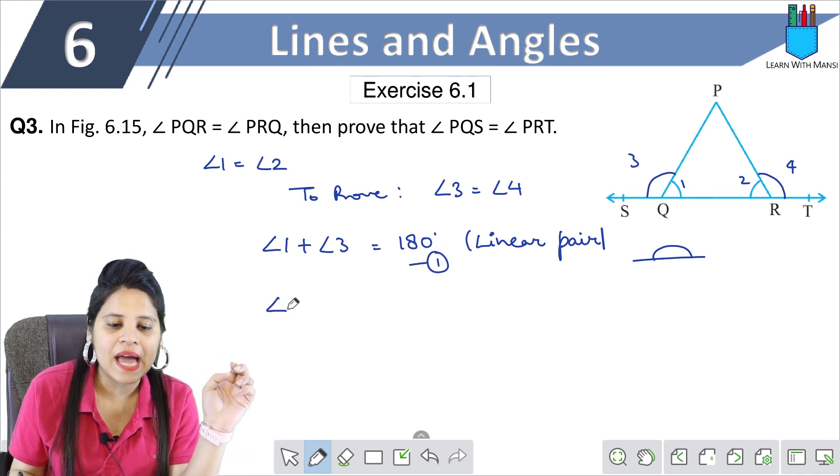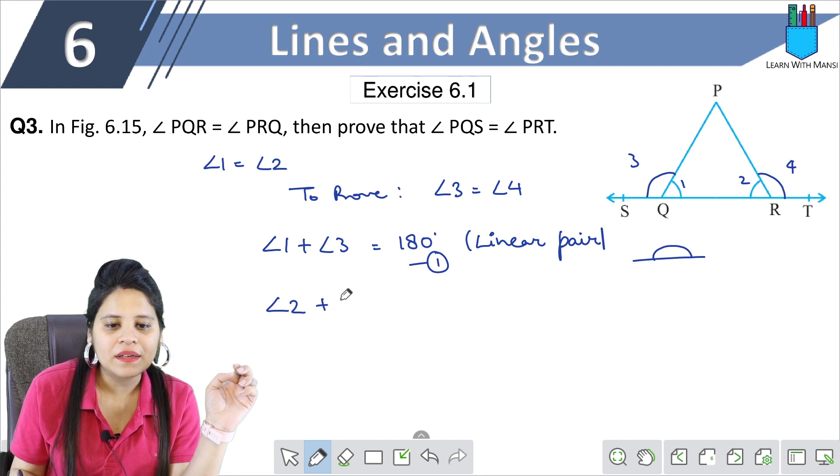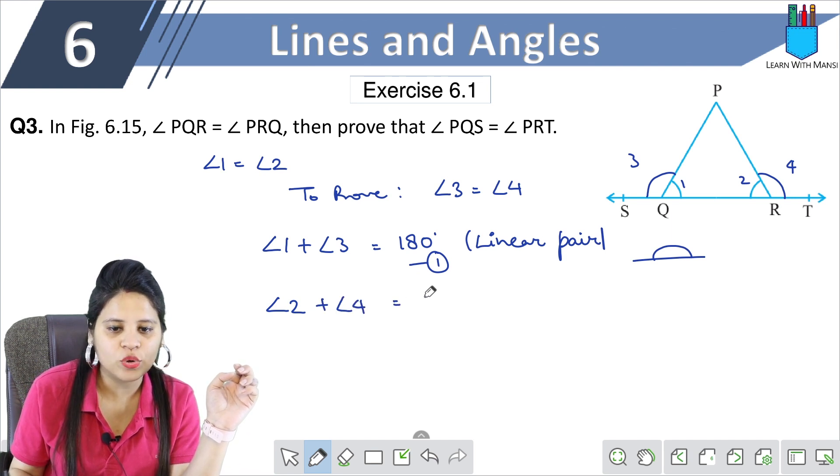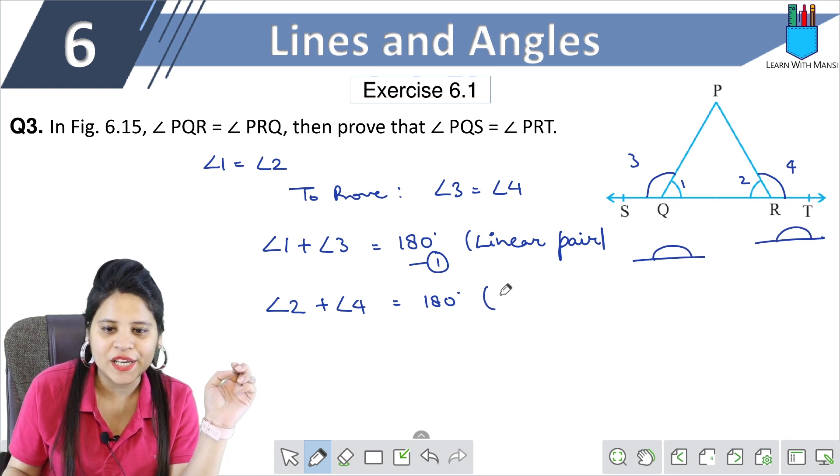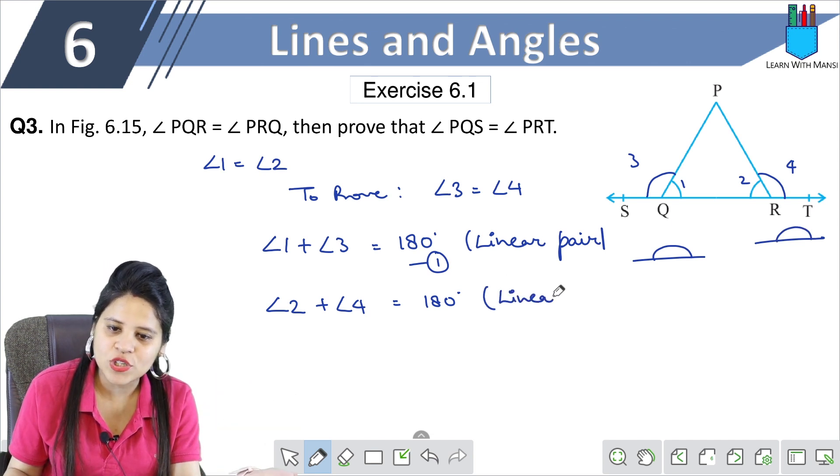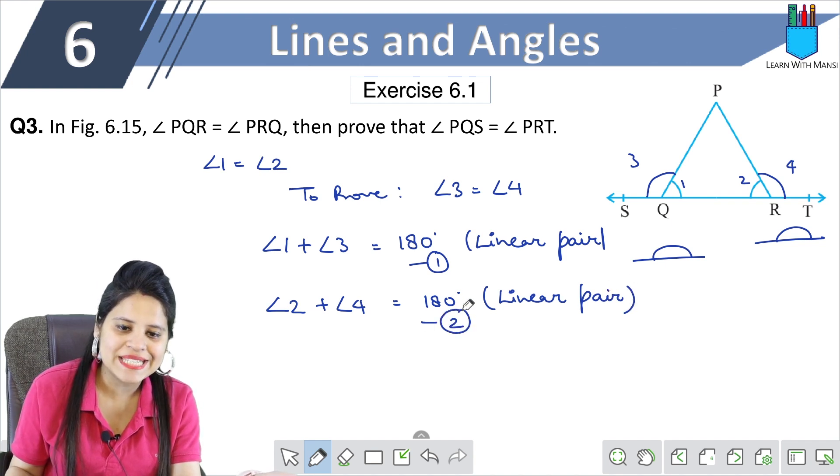Second is similarly, angle 2 we will plus angle 4. So again it will be 180 degrees because this also has a linear pair. So in brackets, again, it is also forming a linear pair. Okay? So this is our equation second.